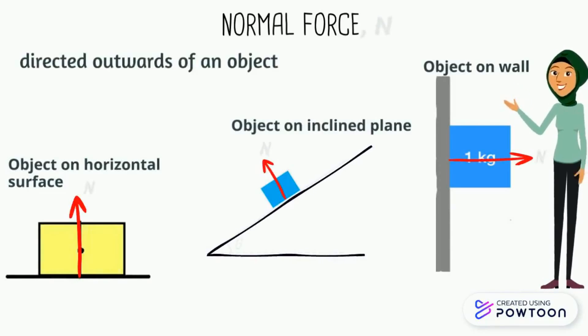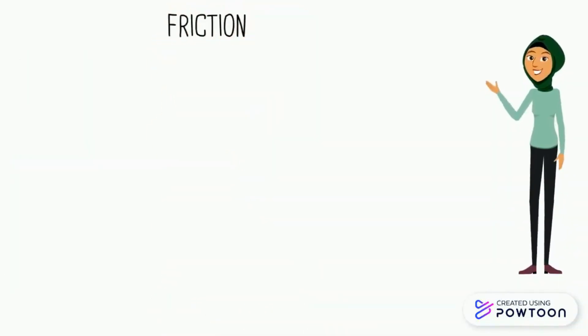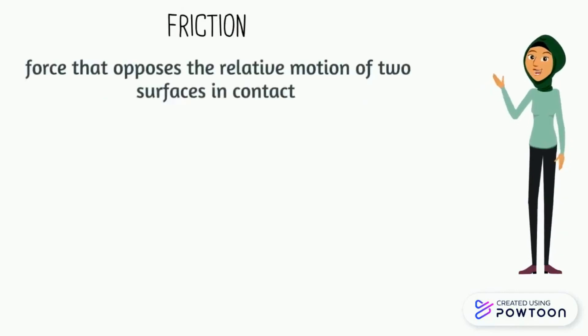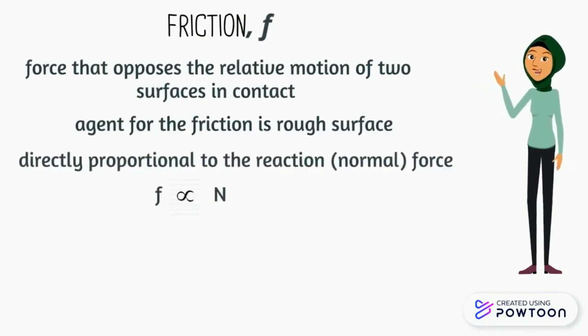Frictional force is a force that opposes the relative motion of two surfaces in contact. Frictional force only exists if there is a rough surface. Friction symbol small f is directly proportional to the normal force capital N. The equation for force here is given as f equals mu N, where f is the friction, mu is the coefficient of friction, a constant depending on the surface nature, and N is the normal force.